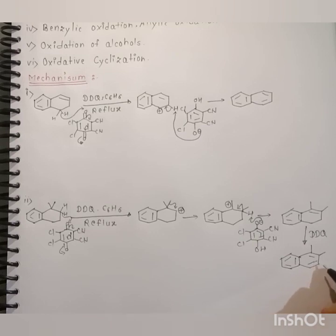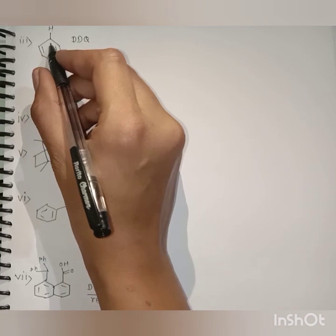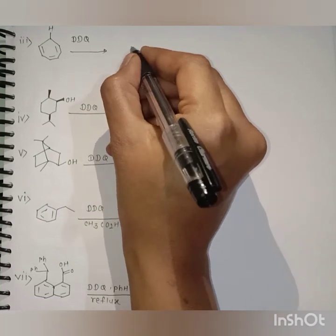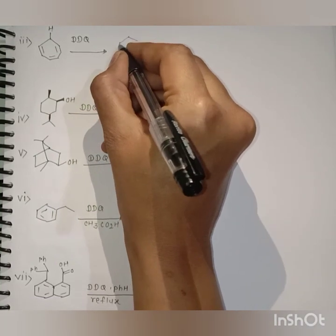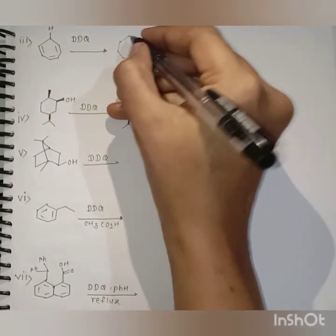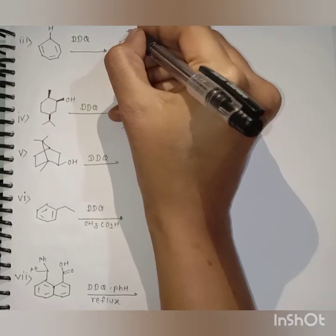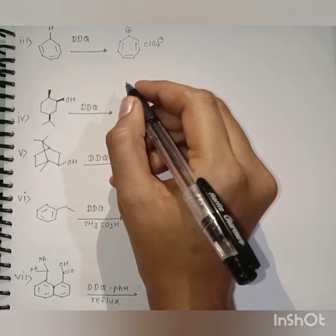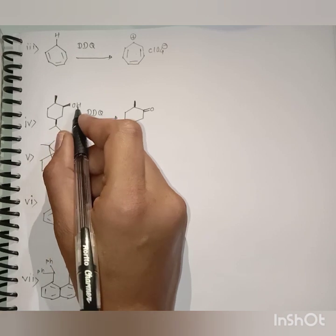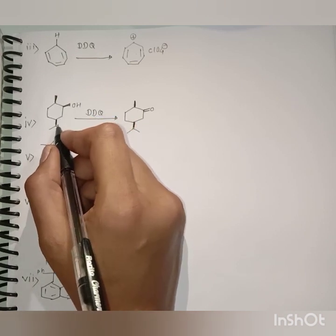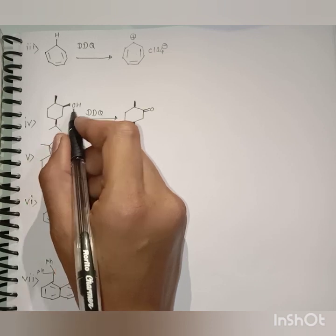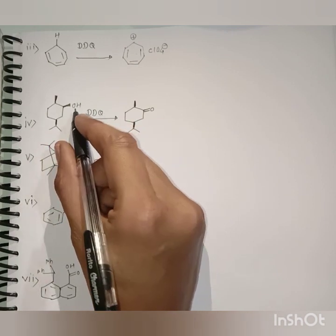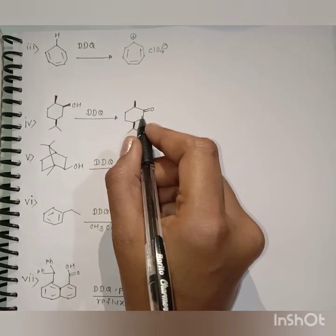In this example, DDQ does the allylic oxidation to give the product. In the next example, the OH group is present on the same side as the isopropyl group, therefore it is more hindered. DDQ does the oxidation of the more hindered alcohol and we get this product.